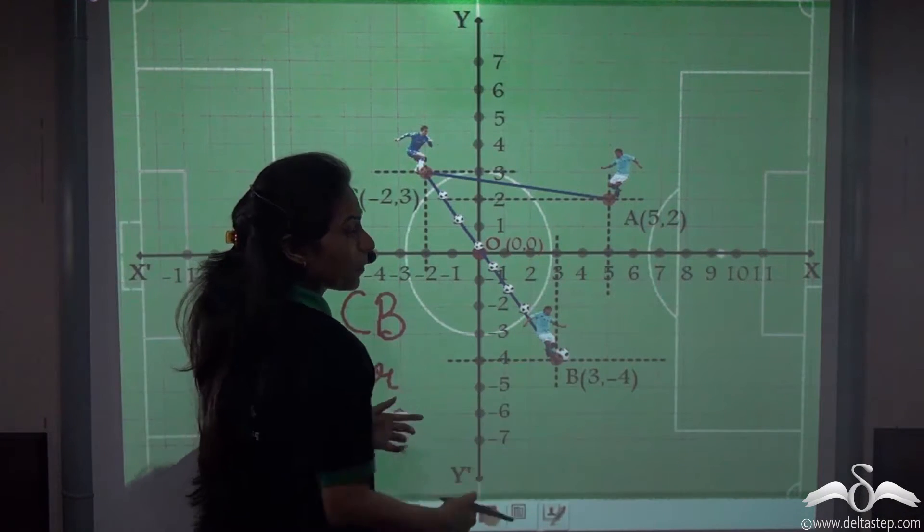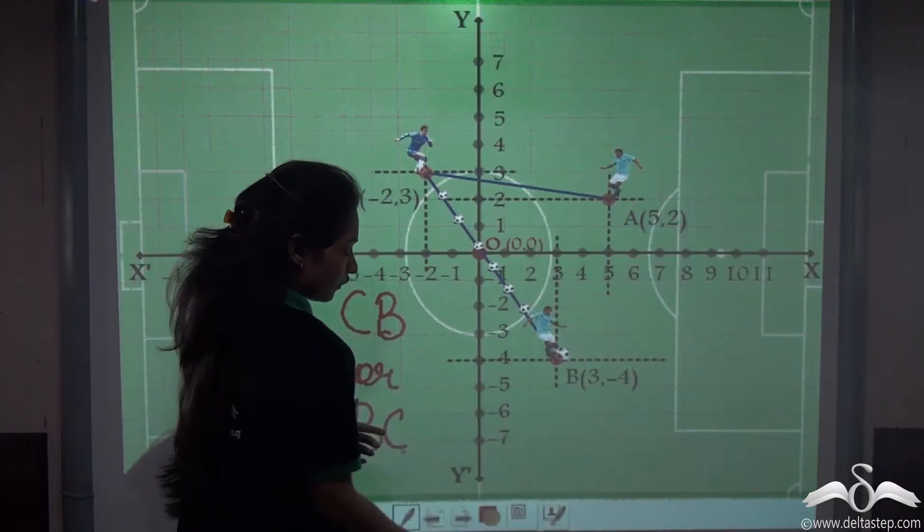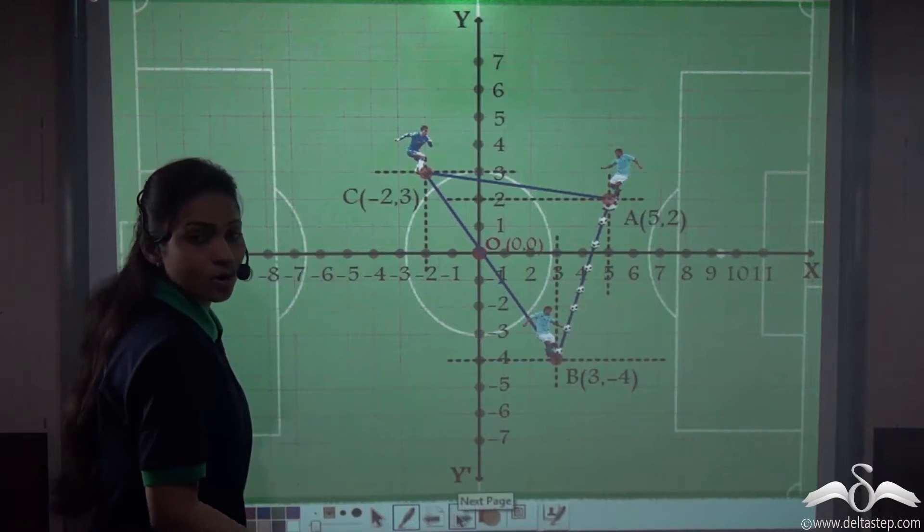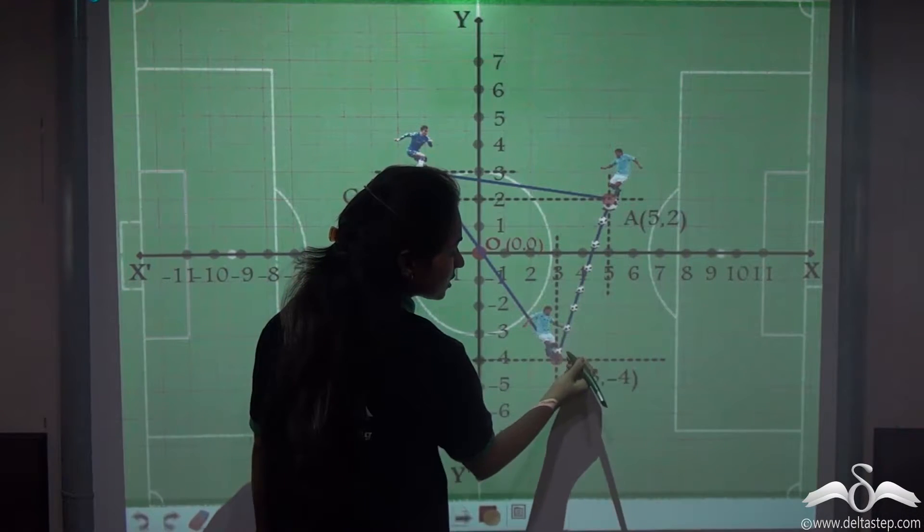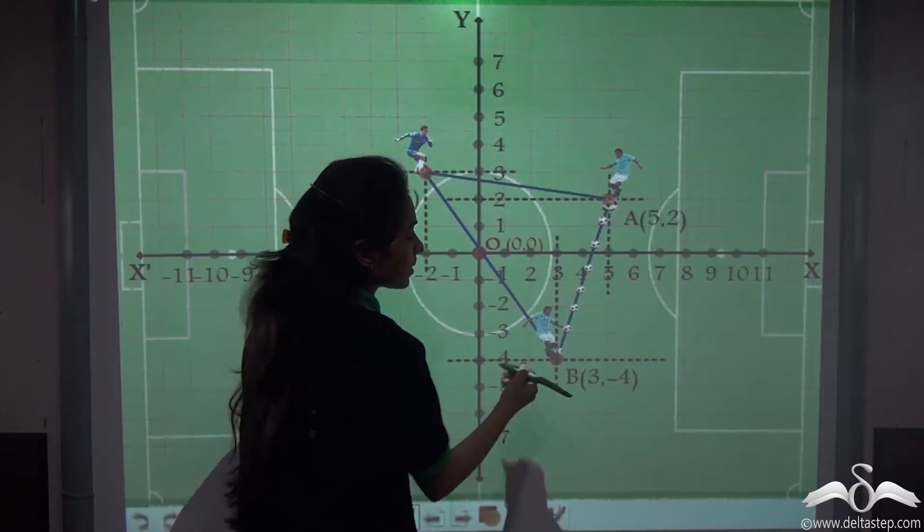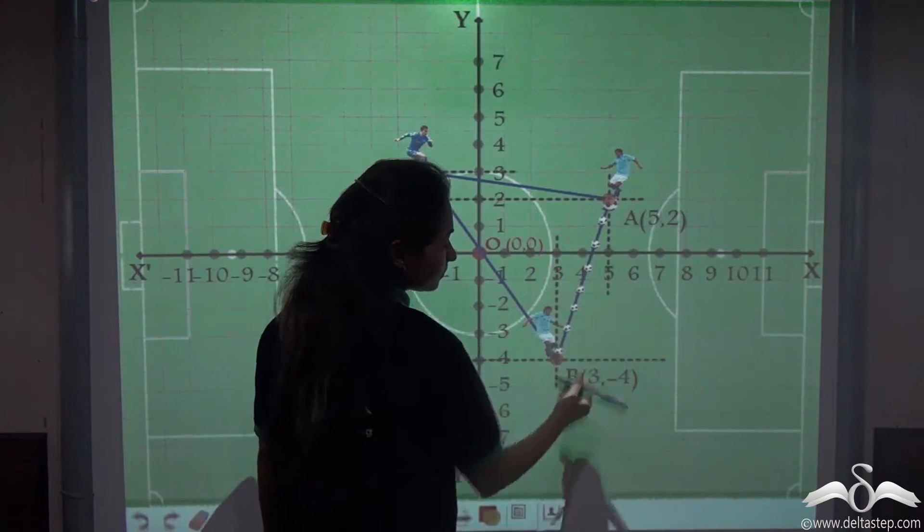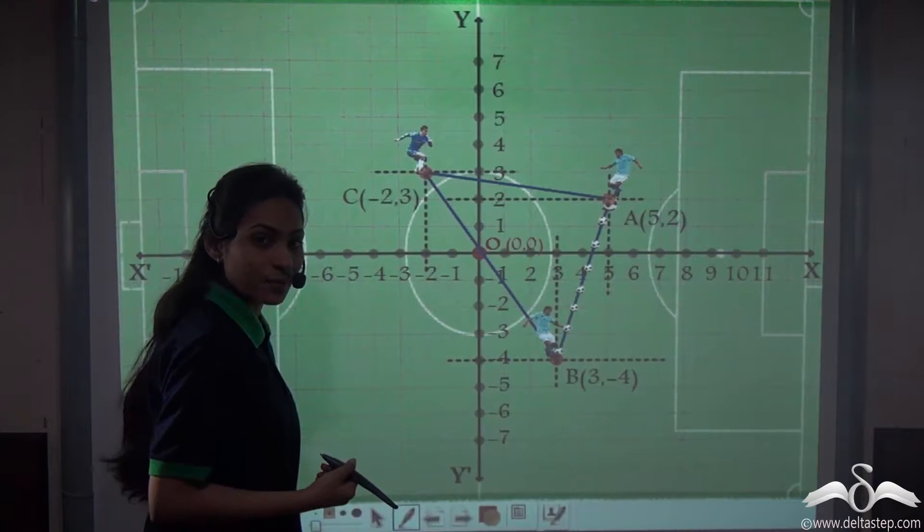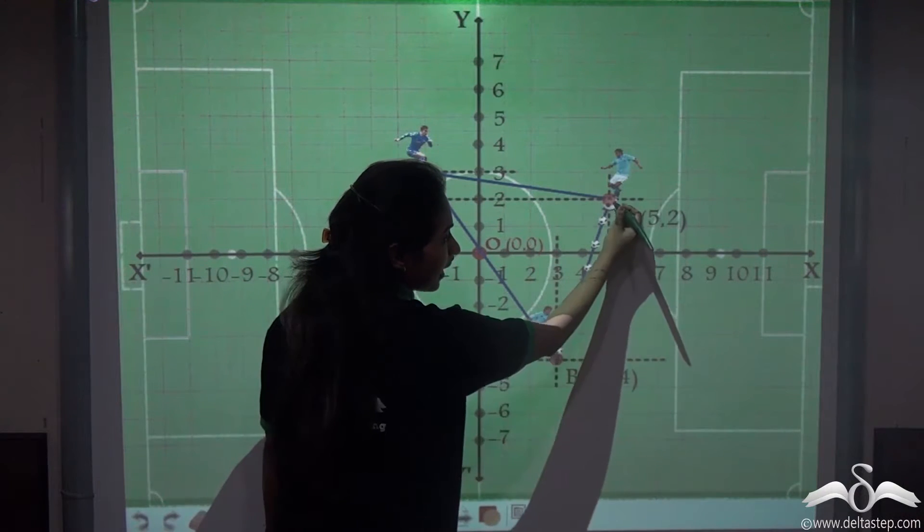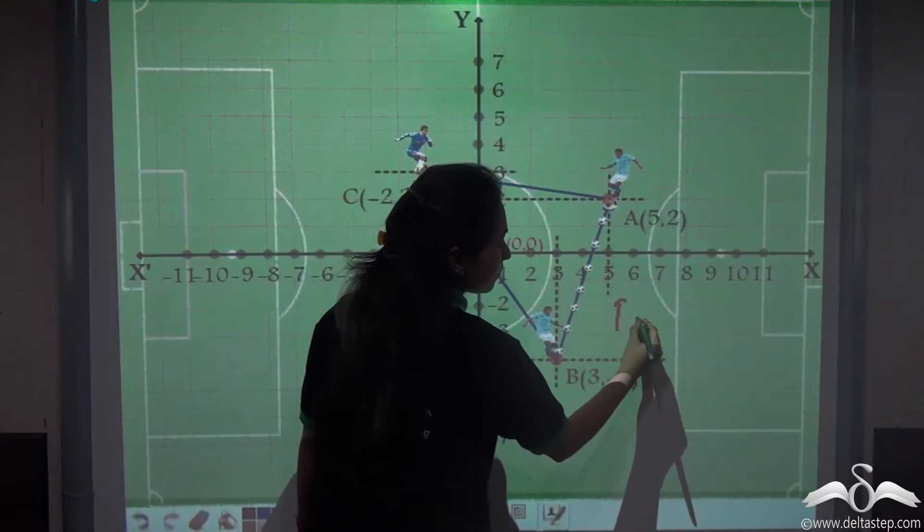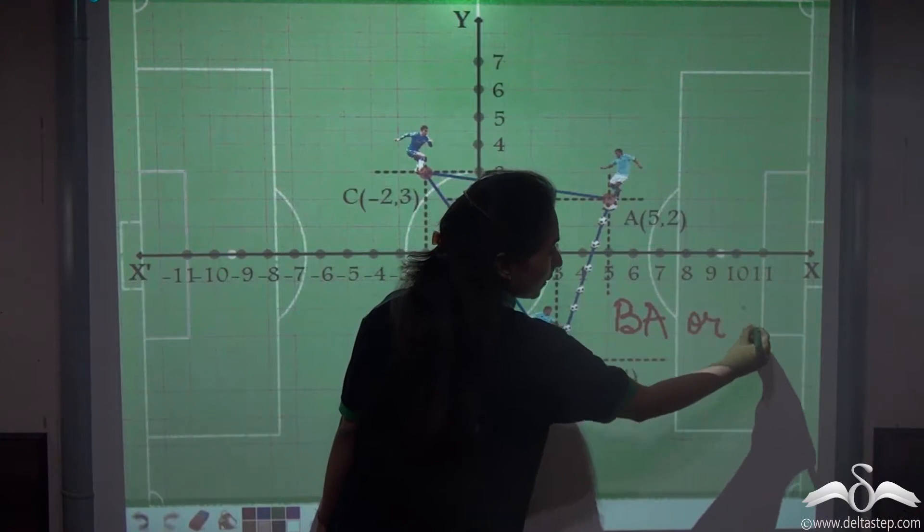Now player B passes the ball back to player A. Again you can see that there is a line segment created. This path from which the ball is passing is creating a line segment. What will you name it? It is joining the points B and A, so you can name it as BA or AB.